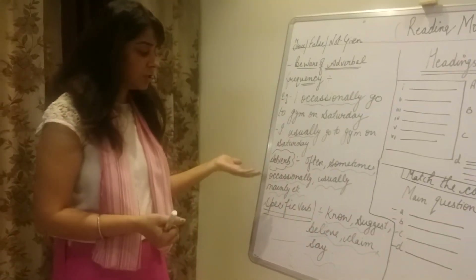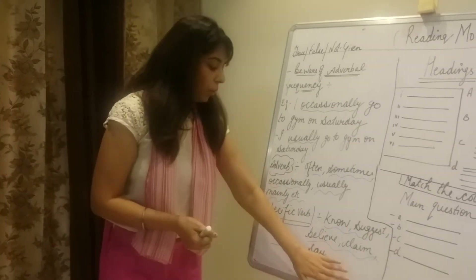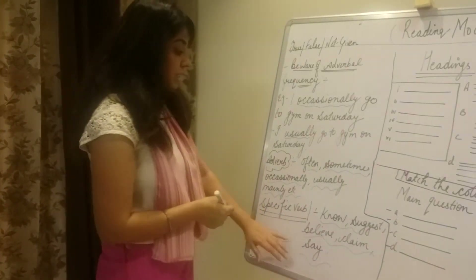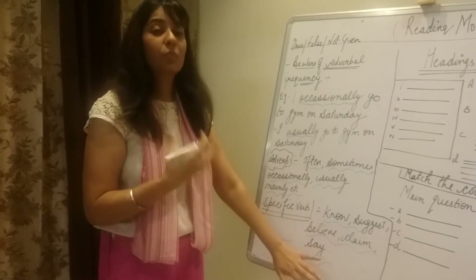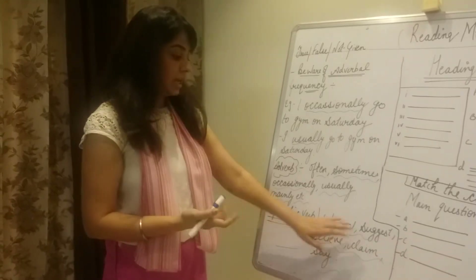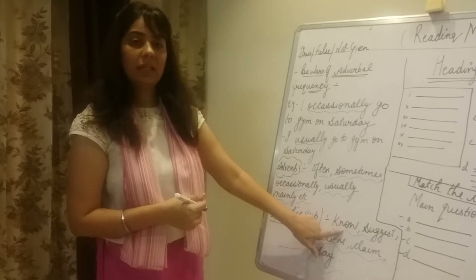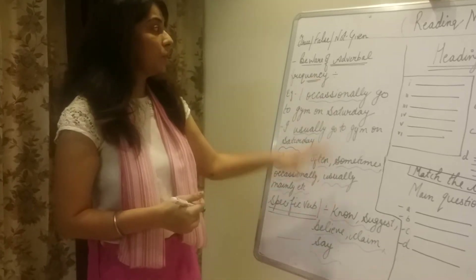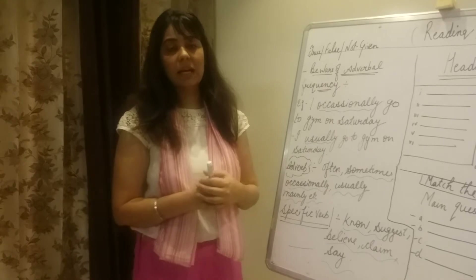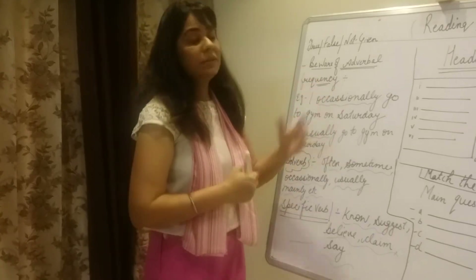For example, it may happen that the question says there are only five species that are under danger, but the passage says only three species have been known about this. So if you have any exercise, please add a very careful view of verbal frequency.